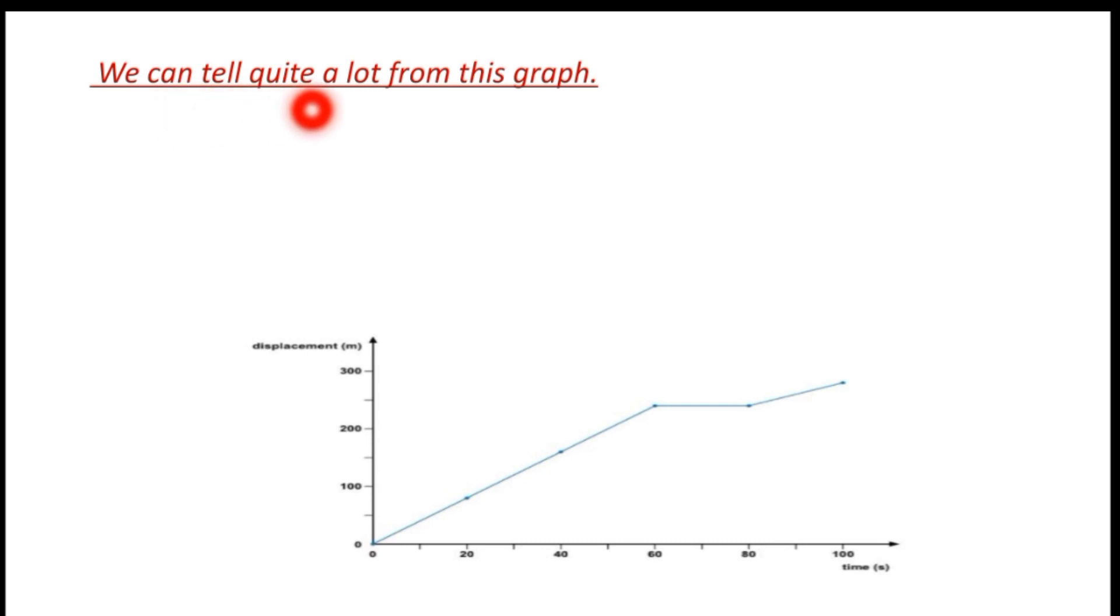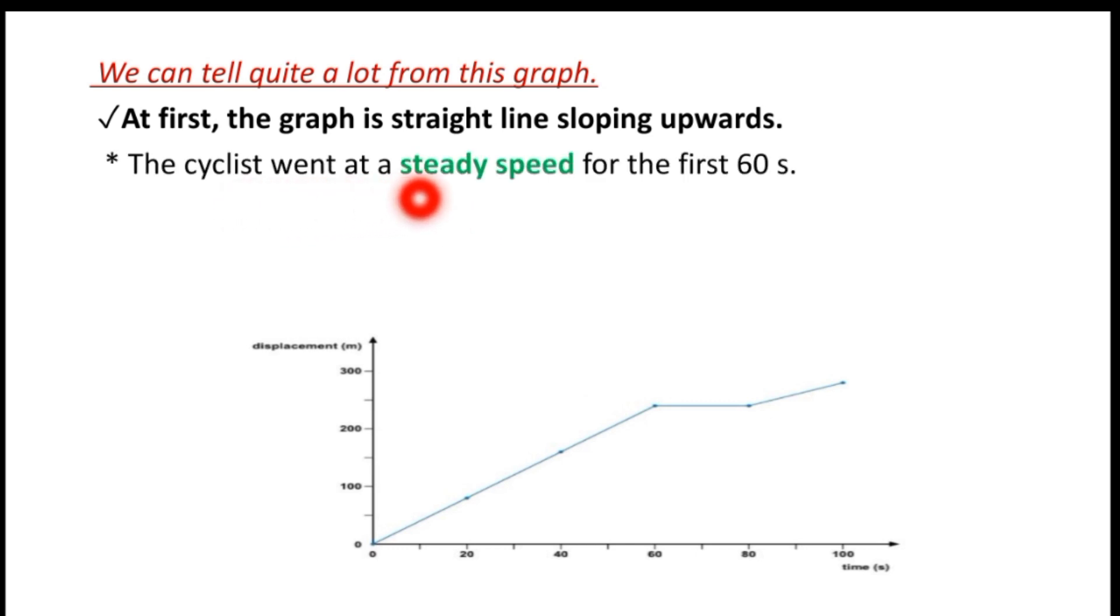We can tell quite a lot from this graph. At first, the graph is a straight line sloping upward. The cyclist went at steady speed for the first 60 seconds. The gradient is constant, showing steady speed for 60 seconds.